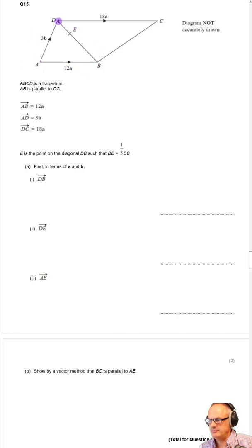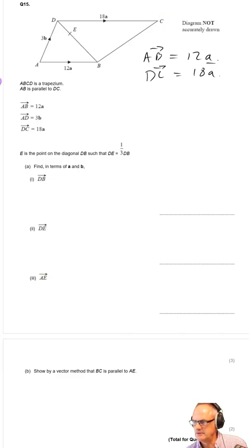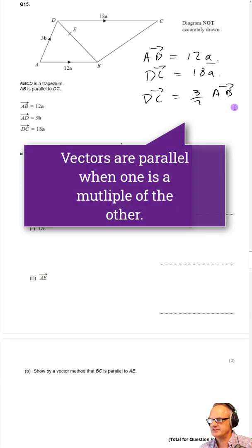Looking at AB being parallel to DC, we can see that AB is equal to 12a and DC is equal to 18a. We can see that DC is equal to 3/2 lots of AB, one and a half AB. So DC is a multiple of AB, therefore that makes them parallel.